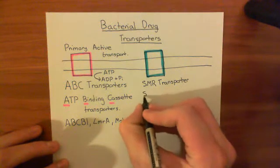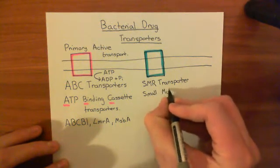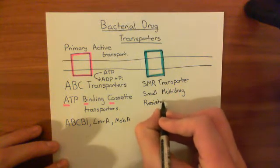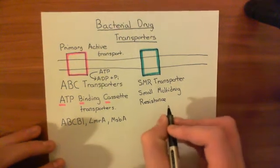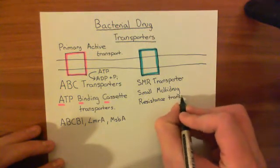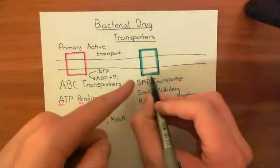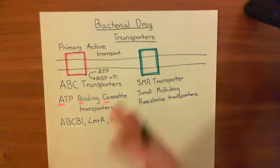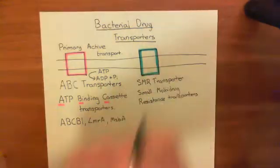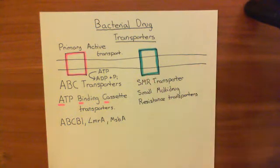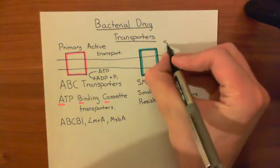Small multidrug resistance transporters are proteins in the membrane of the bacterial cell which are capable of grabbing a drug molecule from the cytoplasm of the cell and moving it to the extracellular aspect of the cell — or, if it's a gram-negative bacterium, into the periplasmic space. All of the proteins in this family act by secondary active transport.